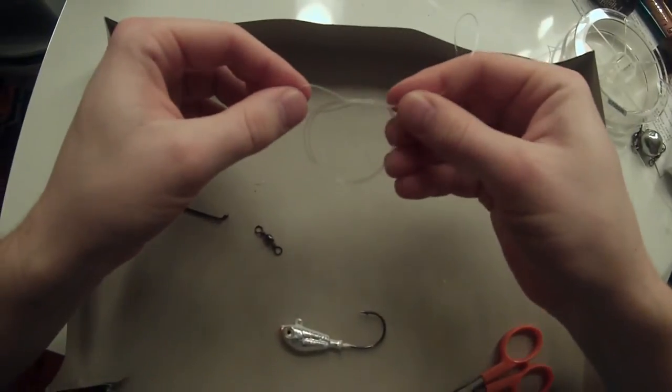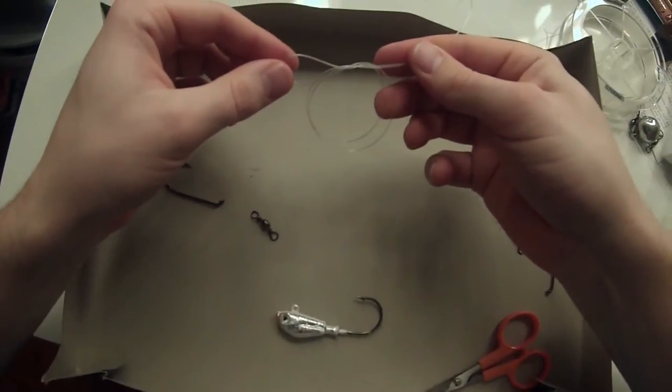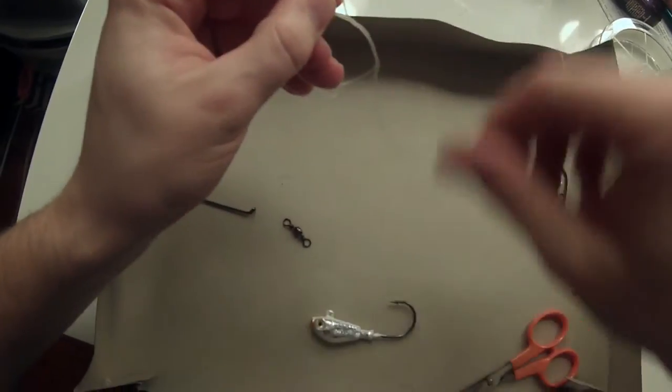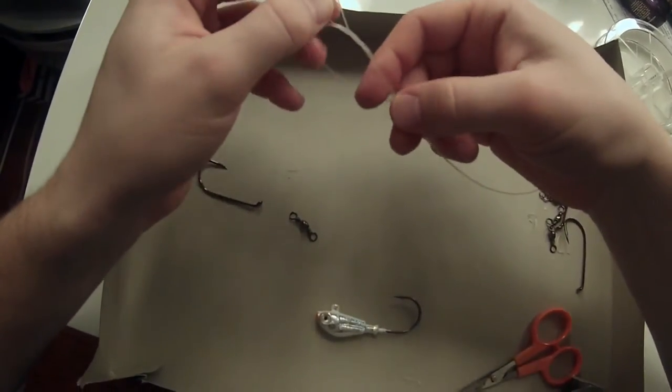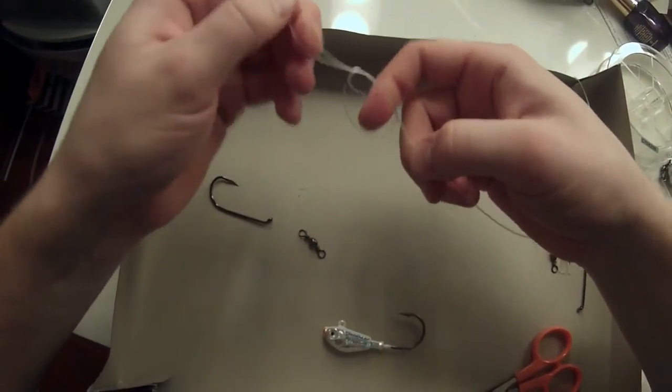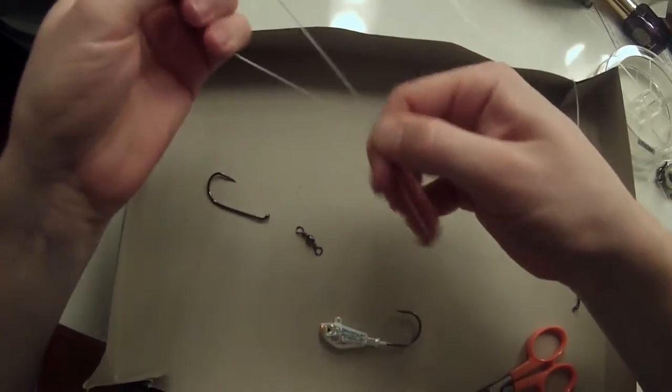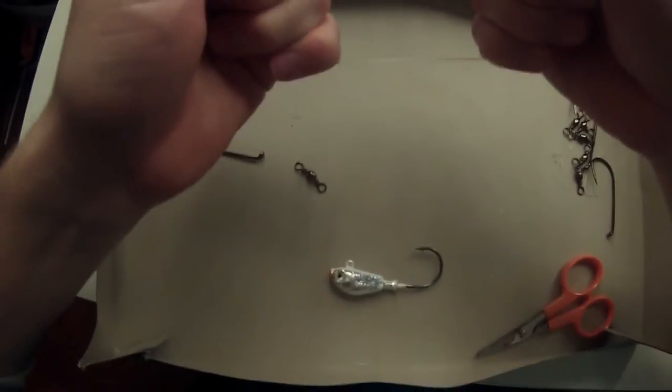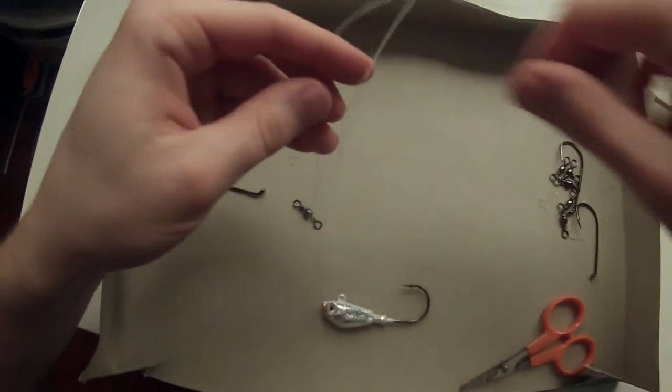You're going to do that twice, funnel through again for extra security, lubricate it, and cinch it down so that you get a decent sized loop. Pull the outsides if you need to, to tighten it up.